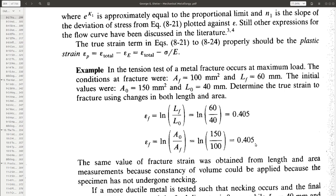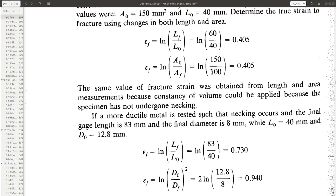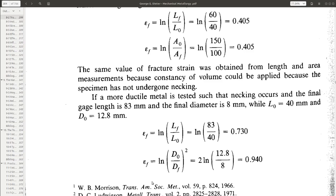These two strain values will not be the same if any local deformation behavior like necking has occurred. In the next example, such a necking phenomenon has happened. The final gauge length is 83 mm and the final diameter is 8 mm, while L0 is 40 mm and D0 is 12.8 mm. Using length to measure εf gives a value of 0.73, but using cross-section area or diameter gives a different value, which is more appropriate compared to the length-based measurement.